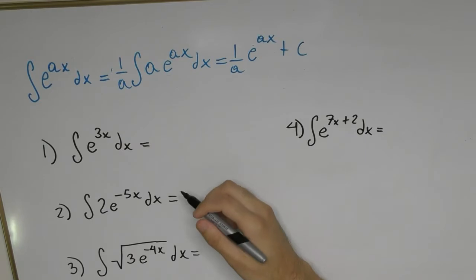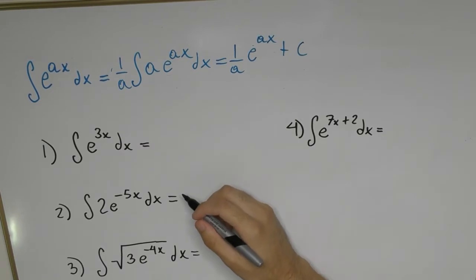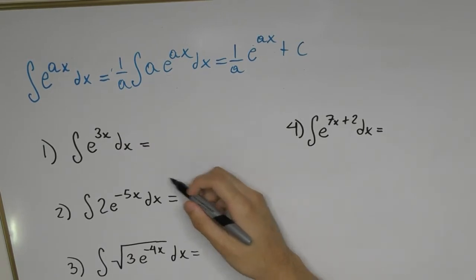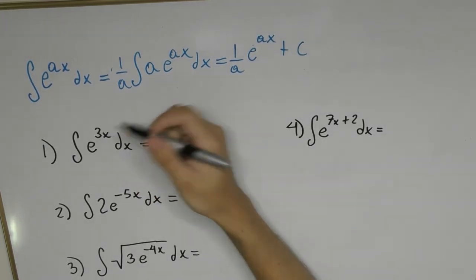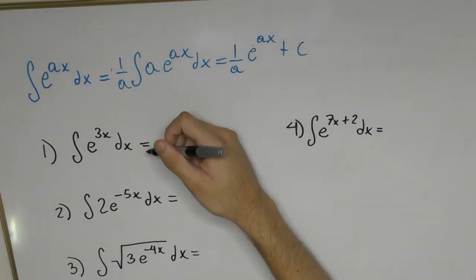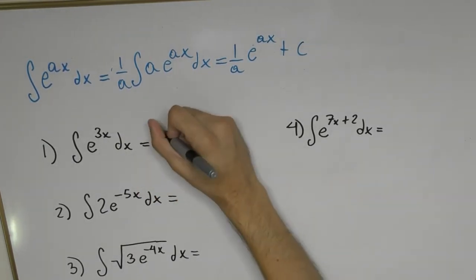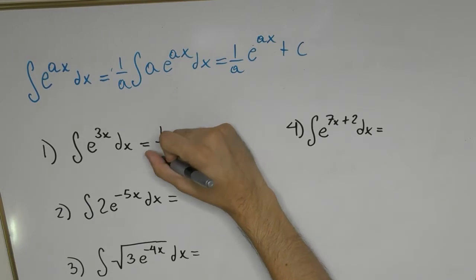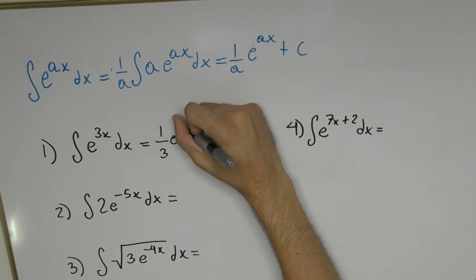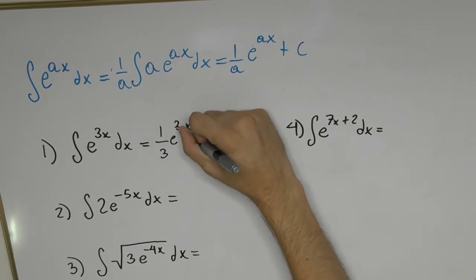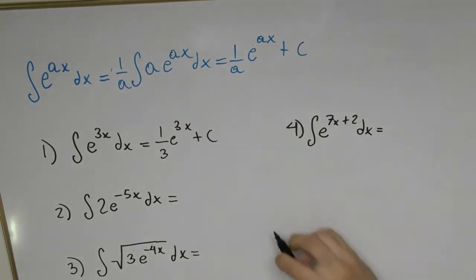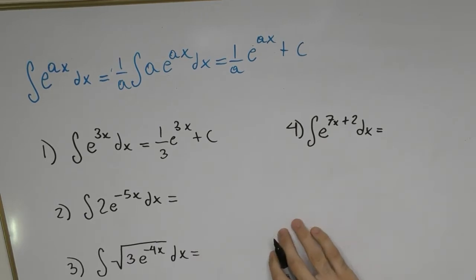Let's apply this to a couple of examples. Starting with e to the power of 3x — here the constant is 3, so we get 1/3 · e^(3x) + c. Very easy and straightforward.